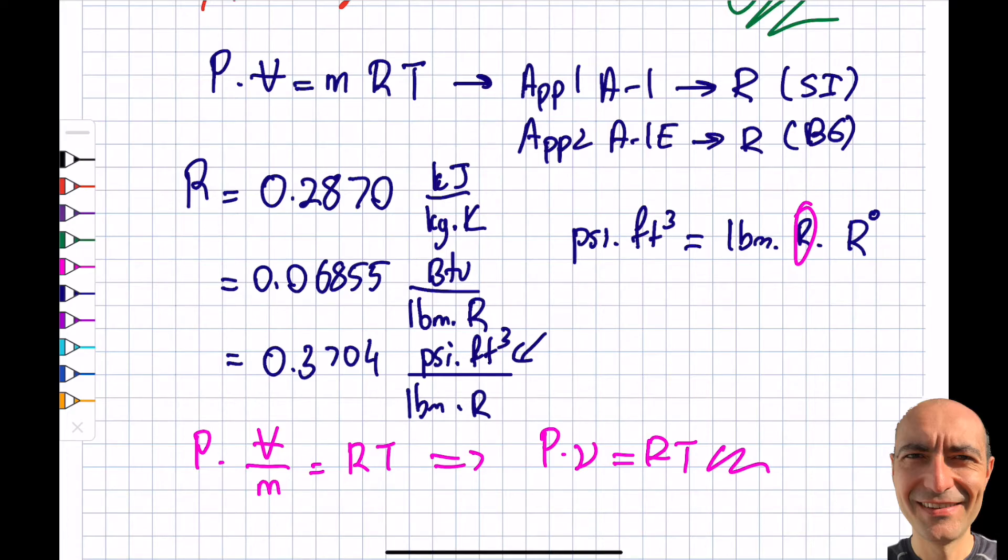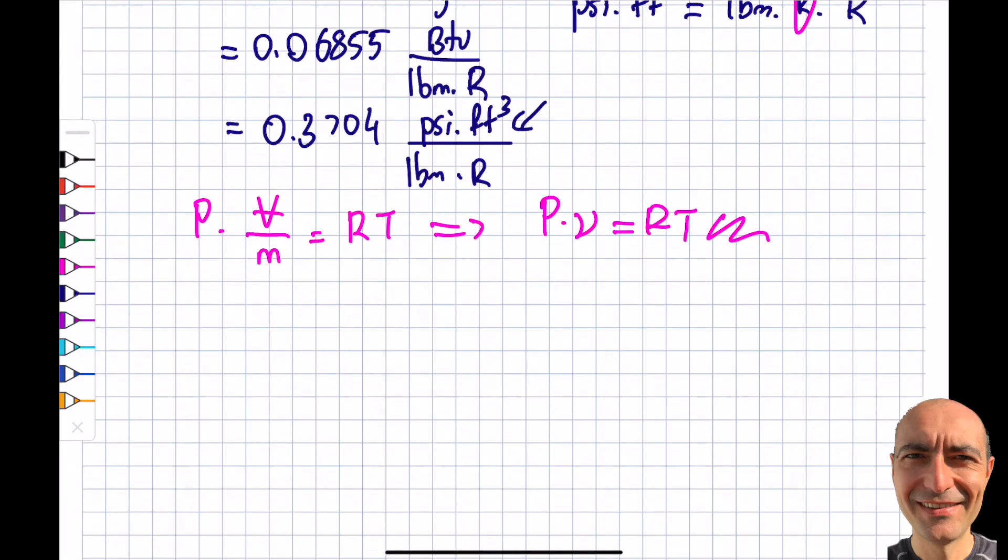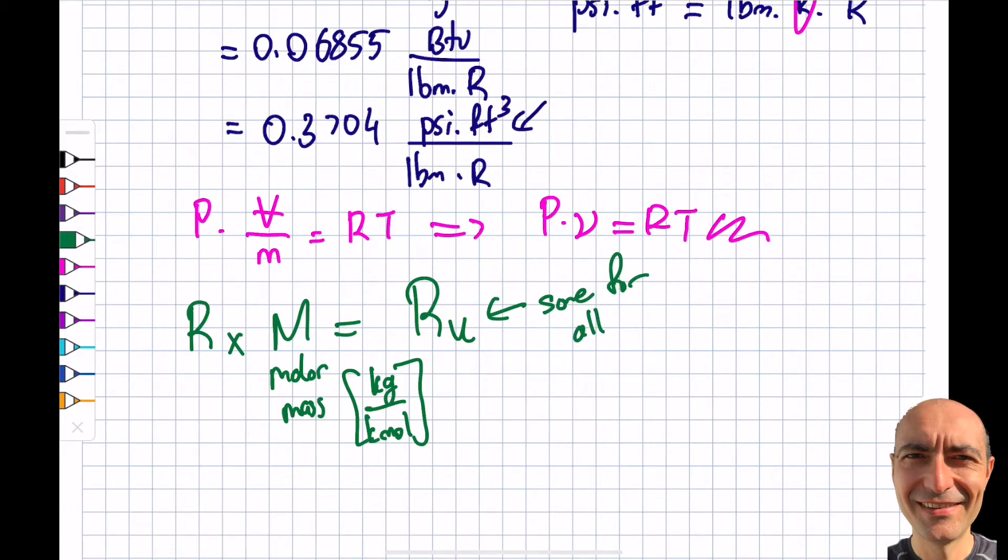Now I want to connect this to the version that has the universal gas constant. One thing interesting to note is this R that I'm working with: when I multiply this by molar mass, this is molar mass M, and in terms of units it's either gram per mole or kilogram per kilo mole (we typically use kilo mole version), the multiplication of this is called the universal gas constant. And it is important: this is the same for all gases. It's kind of very interesting, right? This is the universal gas constant.